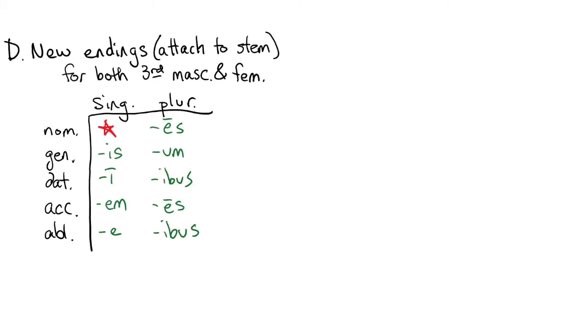Now, let's take a look at the endings which will attach to the stem. These are going to be the same endings for both masculine and feminine third declension nouns. The endings will go -star, -is, -i, -m, -e, -es, -um, -ibus, -es, -ibus.